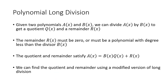Now we want to take these ideas from long division of numbers and carry them into polynomial long division. Instead of dividing a number by another number, we're dividing a polynomial by another polynomial. The dividend A(x) is the polynomial we're dividing into, and B(x) is the divisor. We divide A(x) by B(x) to get a quotient and a remainder, both polynomials. The remainder must either be the zero polynomial or have degree less than the degree of the divisor B(x). We once again get the equation A(x) = B(x)·Q(x) + R(x). Let's look at a couple of examples.